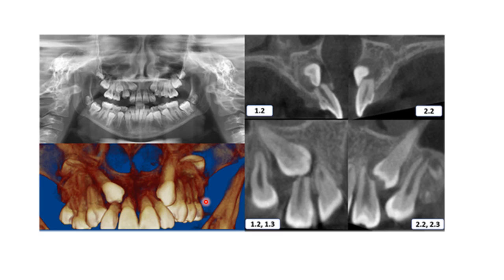If root resorption is severe, this can completely change the treatment plan. In such cases, we may need to extract the upper lateral incisor if the resorption is severe and causing mobility. CBCT therefore helps in planning the treatment for those patients.